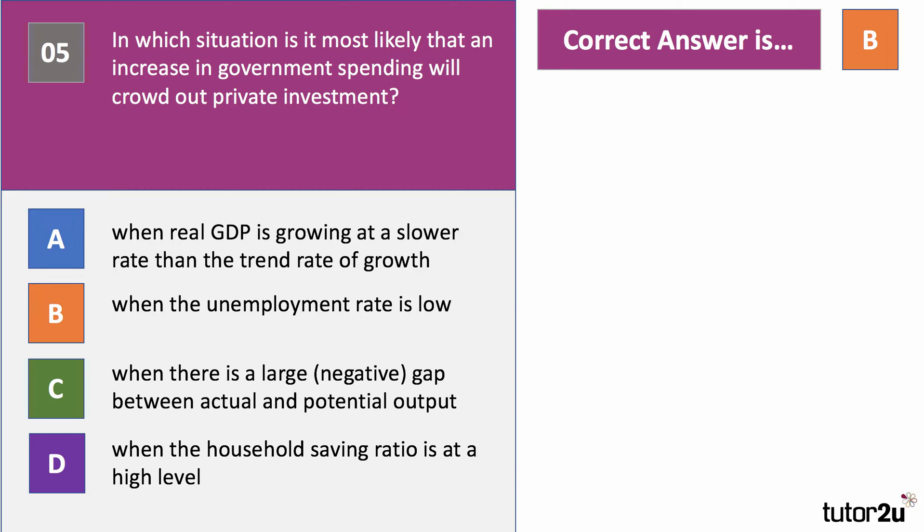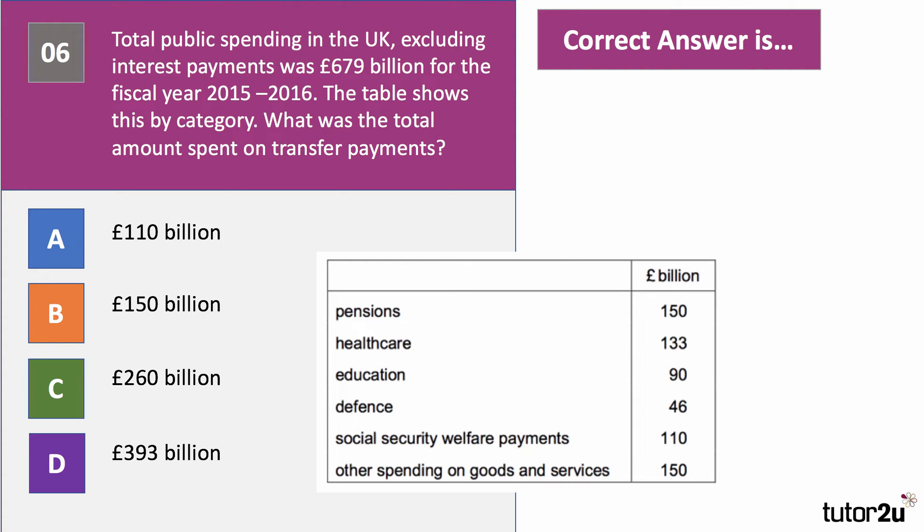Halfway through — some quite tricky questions coming up. Question six: total public spending in the UK excluding interest payments was £679 billion for fiscal year 2015–2016. The table below shows a breakdown of government spending by category. What was the total amount spent on transfer payments? Have a go at question six.